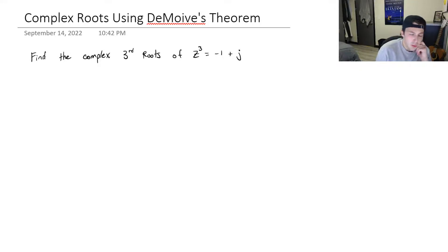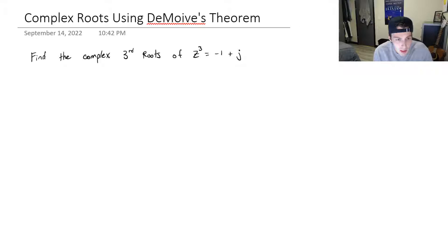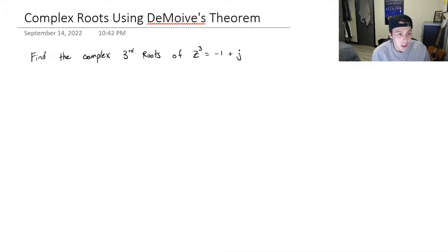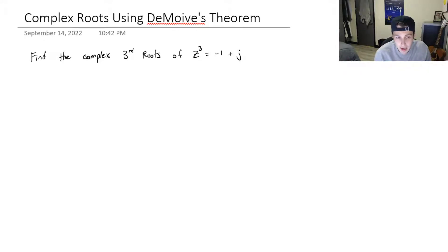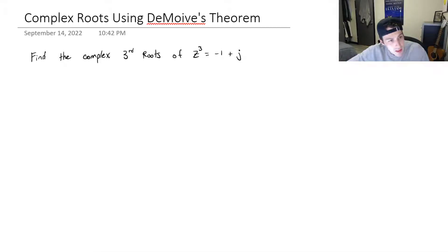In this video, we're going to be using De Moivre's theorem to find the complex third roots of z³ = -1 + j. The third root is just asking: what complex number can be multiplied by itself three times such that we get -1 + j? That's all this is asking, and we can use De Moivre's theorem to make this relatively easy.